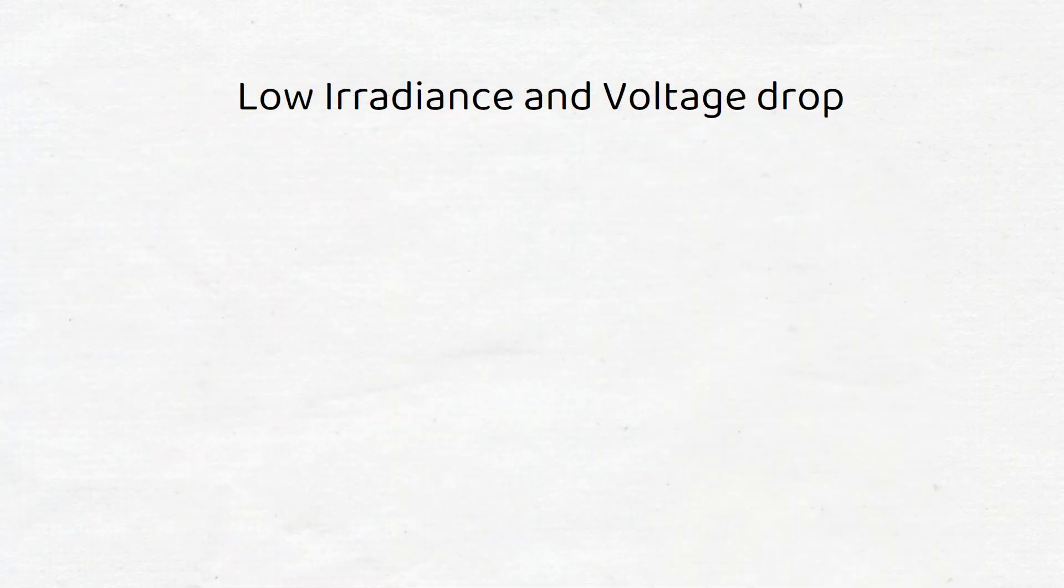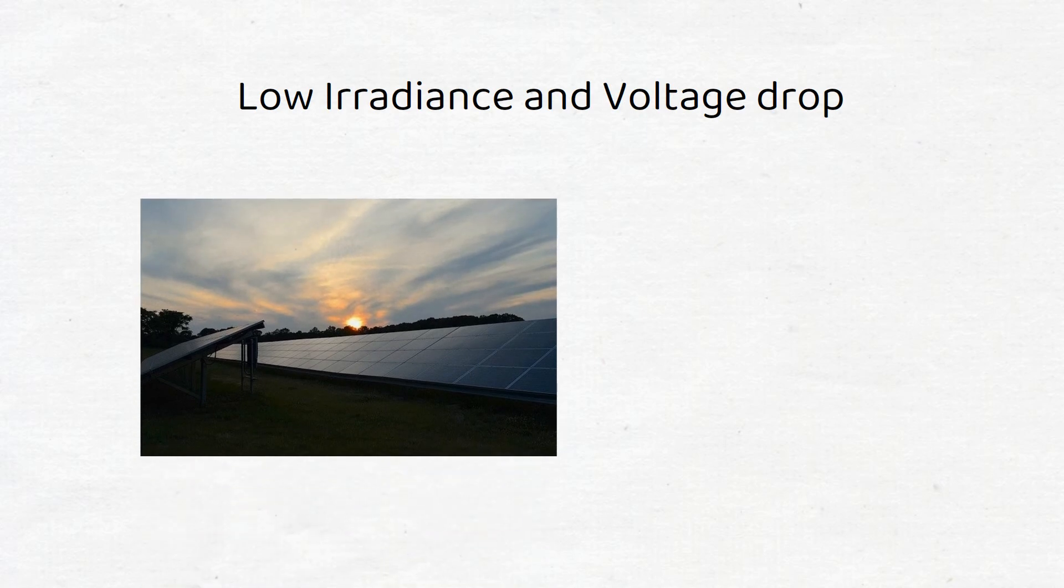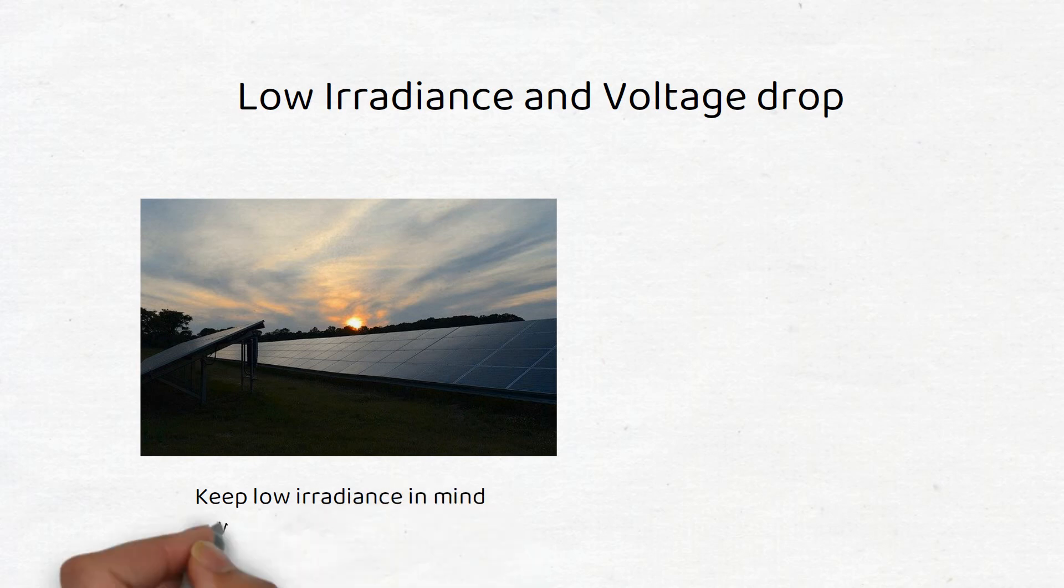If your panel experiences low irradiance in the morning and evening, the voltage might not reach the minimal threshold of your charge controller to start putting energy in the battery. Remember that a series connection adds up the voltage, while the current stays the same.